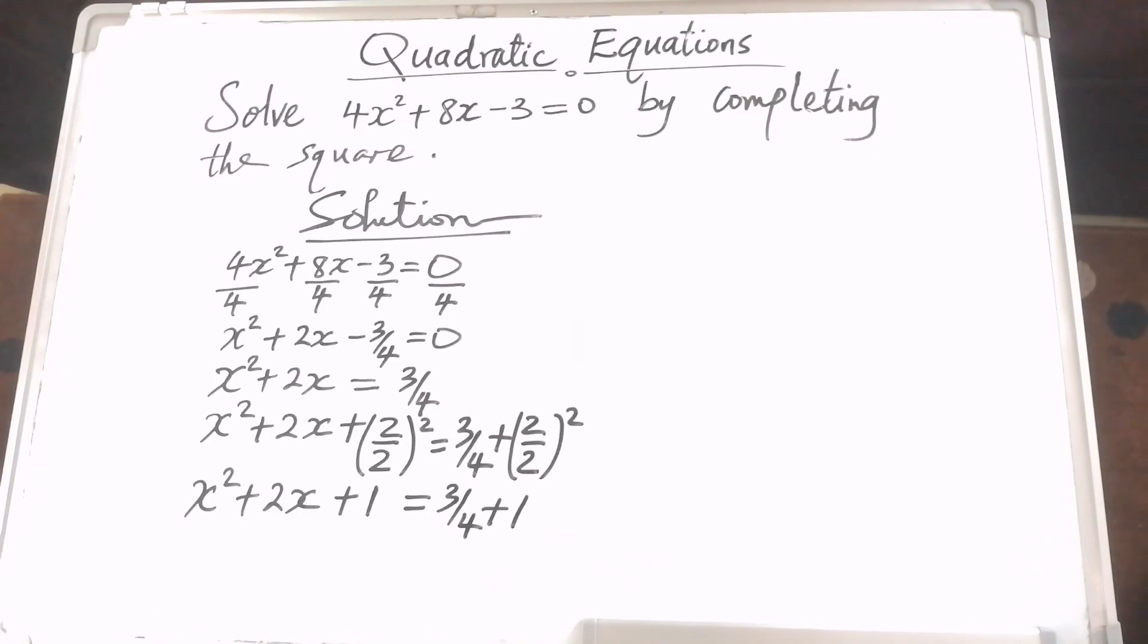The next step is to factorize this expression now that it has become a perfect square. It will be x plus 1 squared equals 1 and 3 quarters, which becomes 1.75 because 3 quarters is 0.75 plus 1.